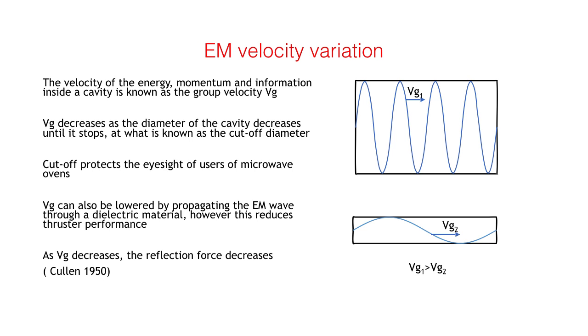Vg is the group velocity of the energy, momentum, and information in any guided wave structure. In a circular cavity, Vg varies with the diameter of the cavity and decreases with decreasing diameter until the velocity is zero. This is known as a cutoff point. The holes in the protective screen of a microwave oven door are a good example of this effect, as they are well below cutoff diameter for the operating frequency of the oven, but above that for visible light. Vg can also be reduced by inserting a dielectric element into the cavity. However, this does reduce thrust performance. In 1950, Cullen proved by experiment that the radiation pressure decreases as Vg decreases.